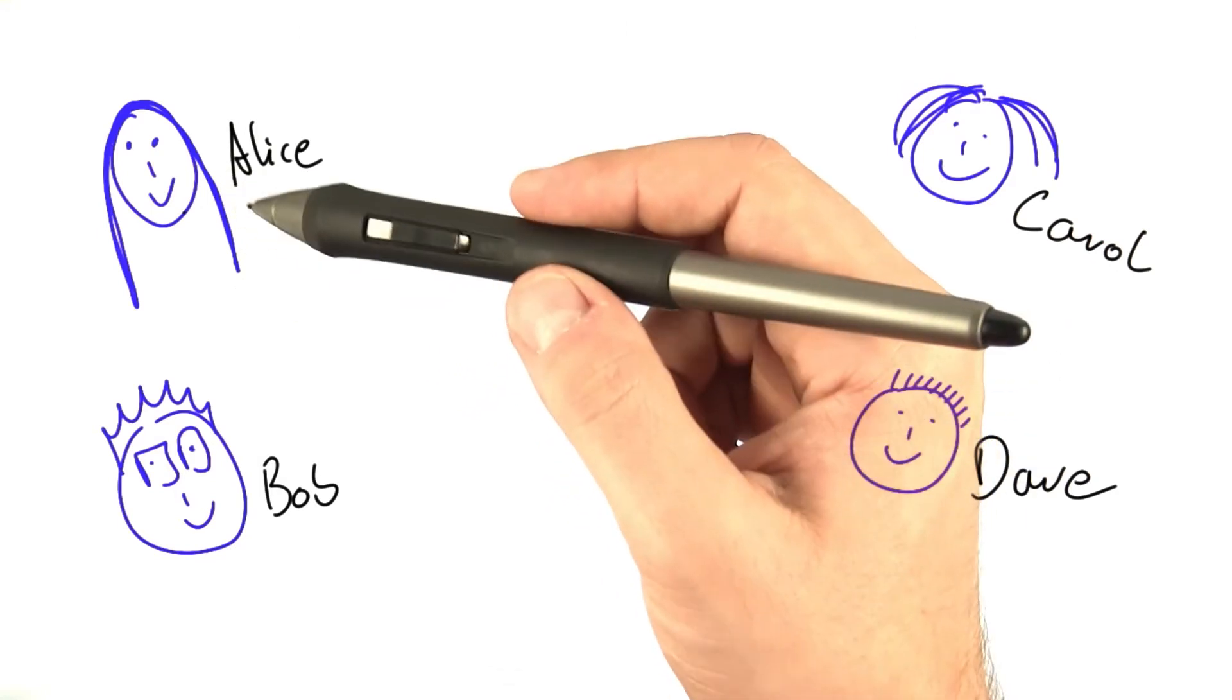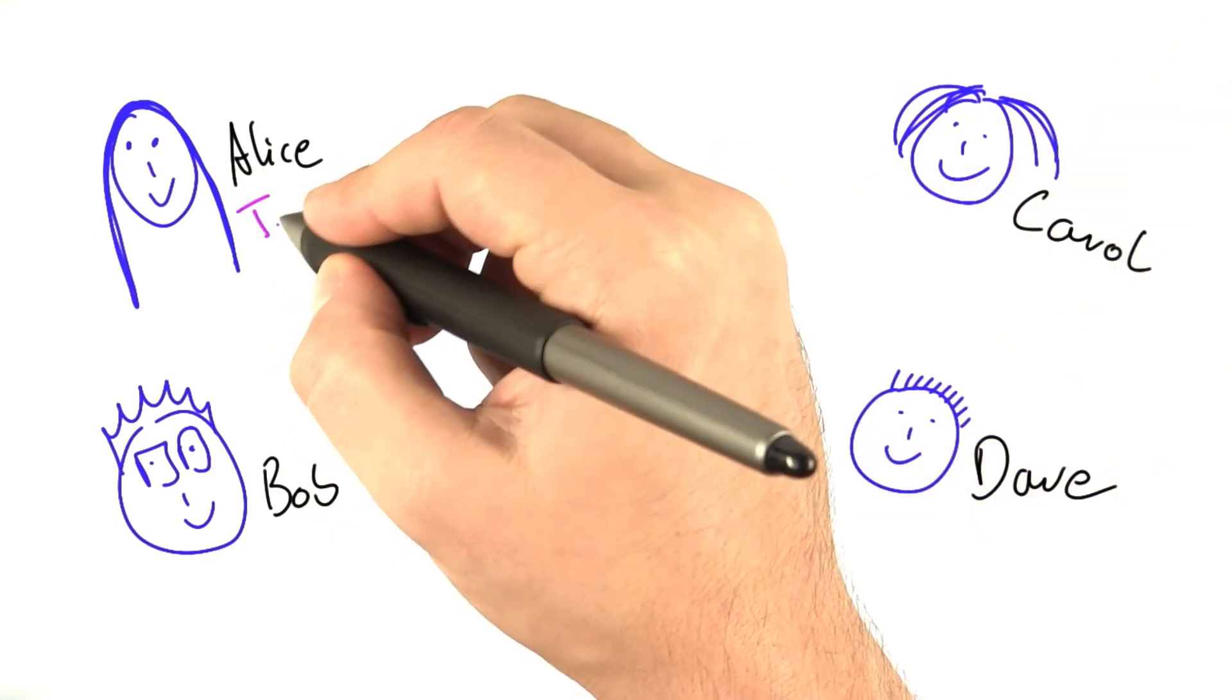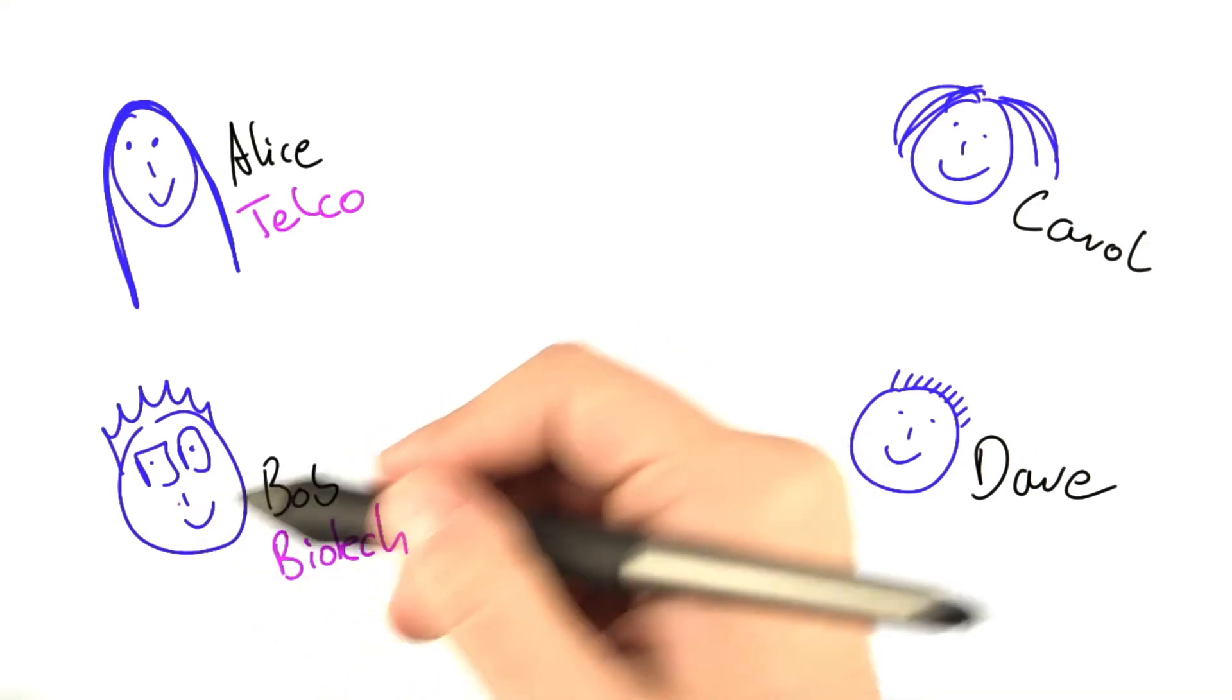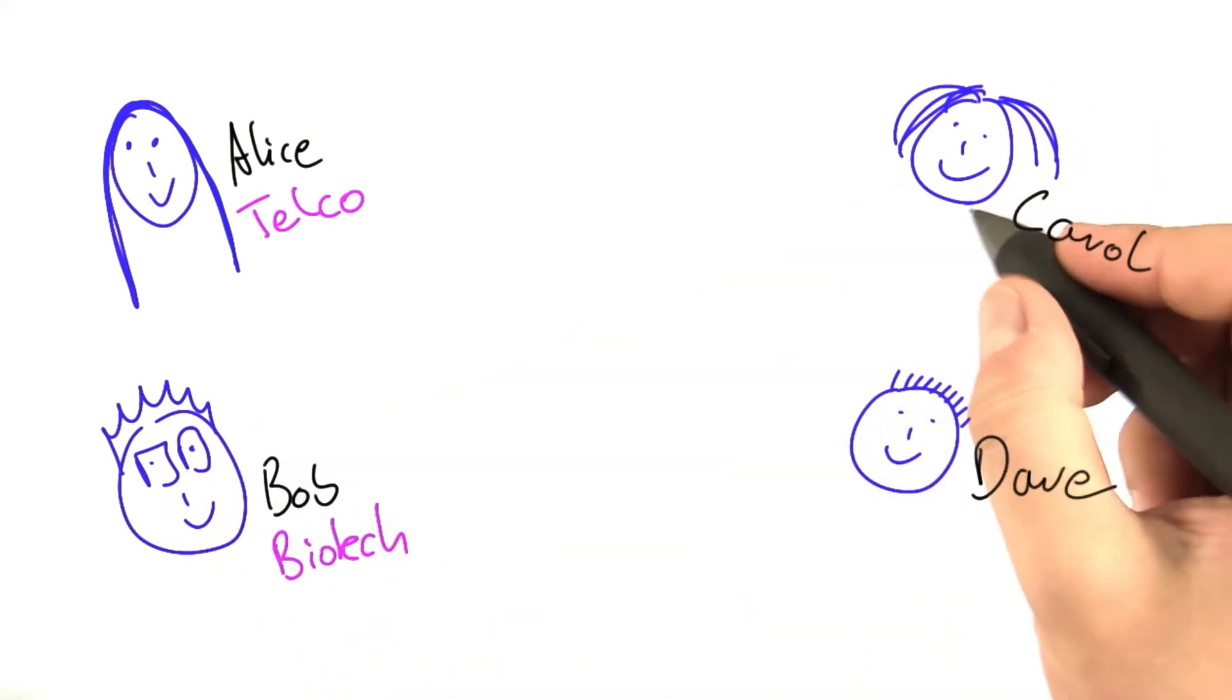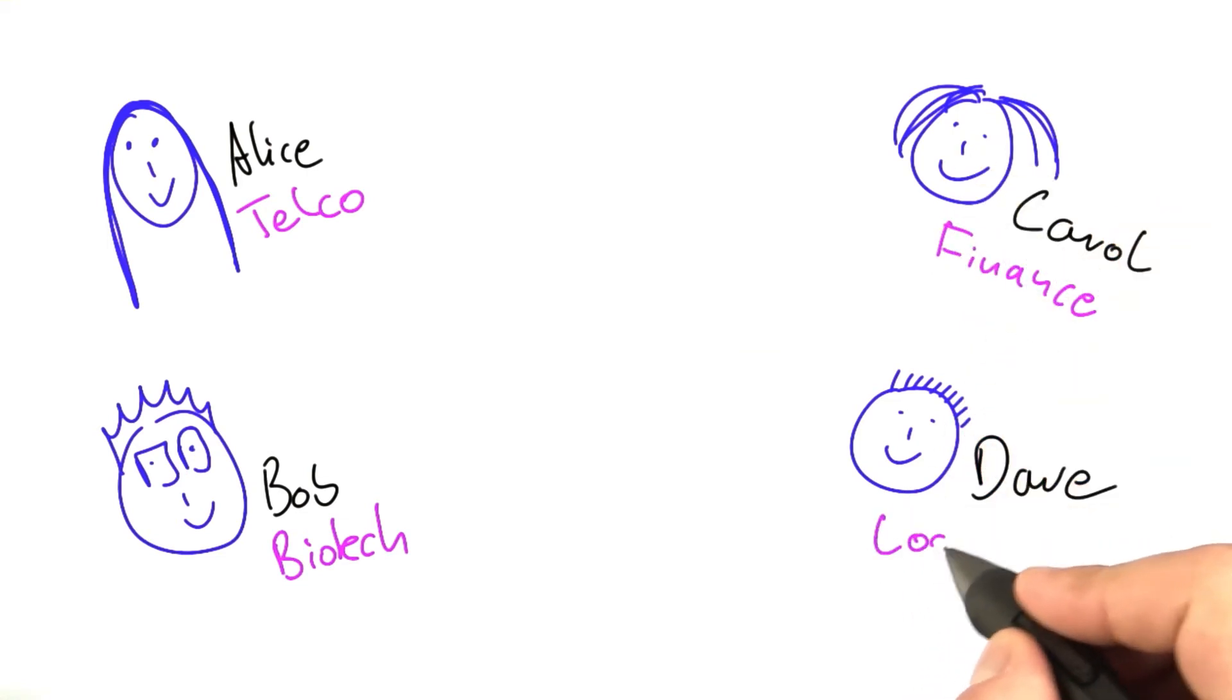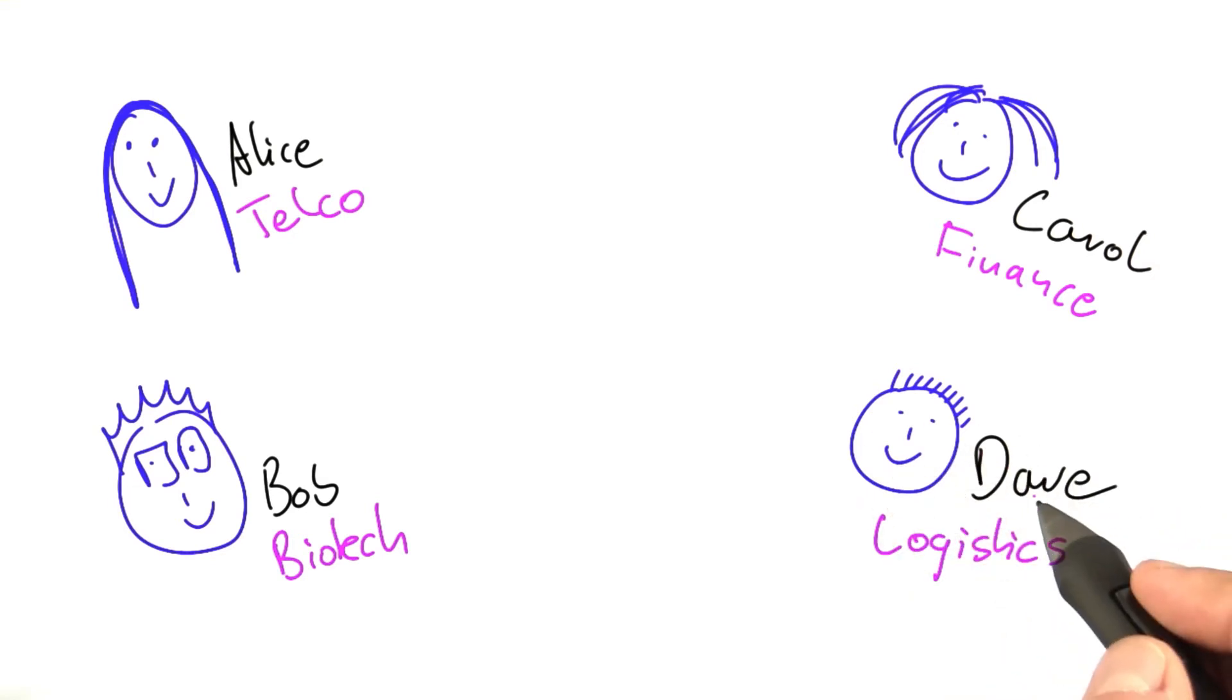Solving tough problems was part of their job. Alice was solving vertex cover for telecommunications. Bob was working in biotech, developing new medicines, analyzing genes. Carol was working in finance, designing secure investments. And Dave was working in logistics where he had to solve the shortest tour problem.